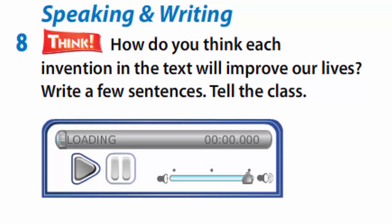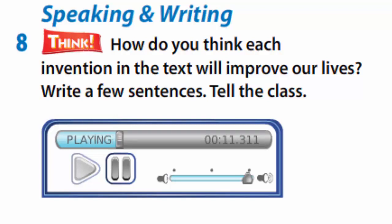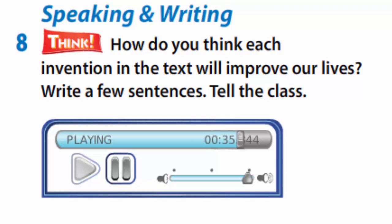In exercise 8, how do you think each invention in the text will improve our lives? Write a few sentences. Listen to the model. People will be able to make clothes that fit them perfectly with the spray-on fabric. They won't need to look for clothes that are the right size. Fabrican will also help people who travel a lot – they won't need to pack so many clothes when they travel. The 3D printer will help scientists and medics to test their ideas. Also, shoppers will be able to use it to get what they want without leaving the house. VR headsets will make games more exciting. Surgeries will be more successful. People can go on a VR holiday and have amazing experiences at home.